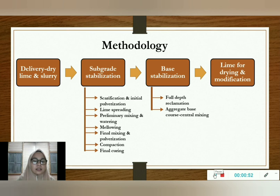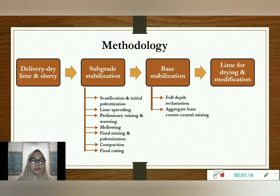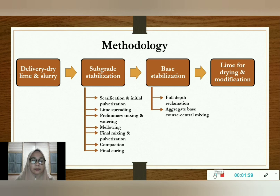The next phase is subgrade or sub-base stabilization. There are seven steps for this phase: scarification and initial pulverization, lime spreading, preliminary mixing and watering, mellowing period, final mixing and pulverization, compaction, and final curing. First, scarification and initial pulverization: the subgrade is pulverized into fine particles, and it is important to remove non-soil material larger than 3 inches, such as stems and roots. Second, lime spreading, using either quicklime or slurry. Quicklime is normally distributed pneumatically or mechanically, while slurry can be applied by distributor truck.